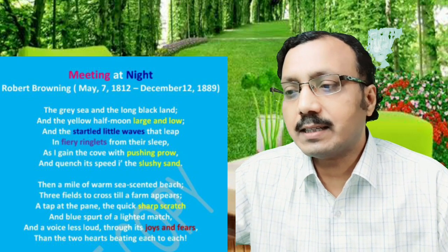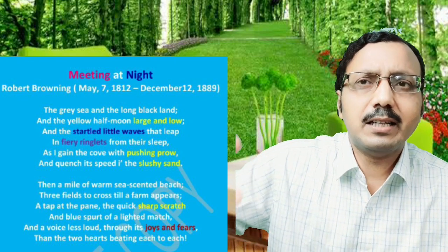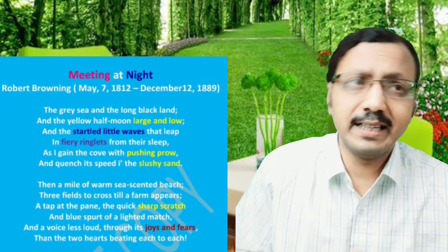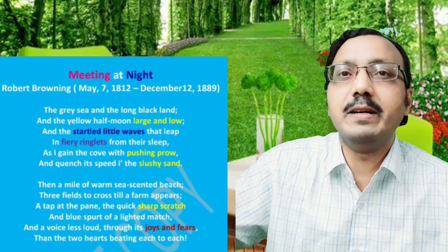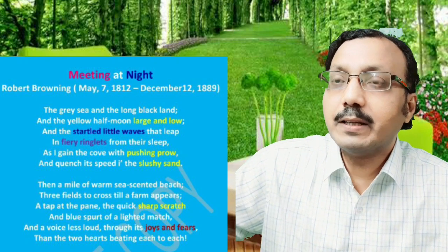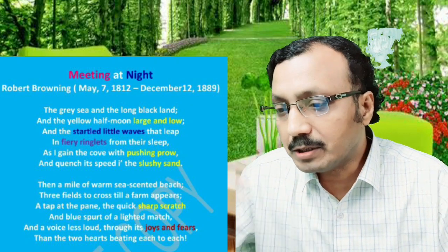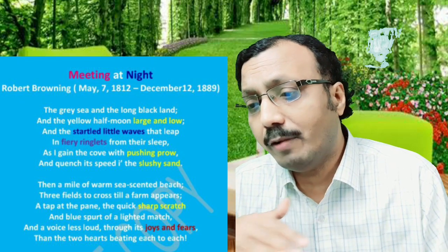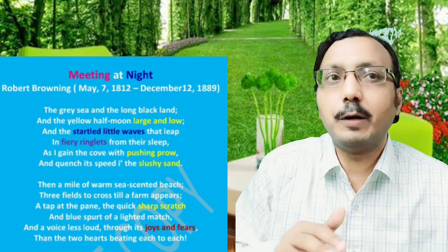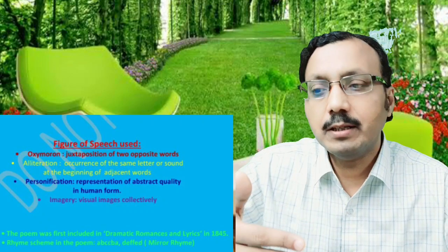Moving on to the second stanza — the entire poem is very short, comprising only two stanzas. In the second stanza, we find the second phase of the journey, which culminates in the fulfillment of the long-desired meeting with the beloved. Then a mile of warm sea-scented beach — after the poet reaches the shore and the prow's speed is quenched, the beach stretches for a mile.